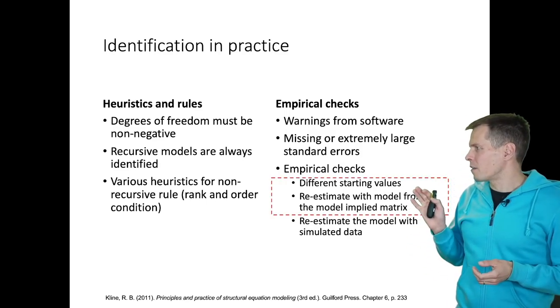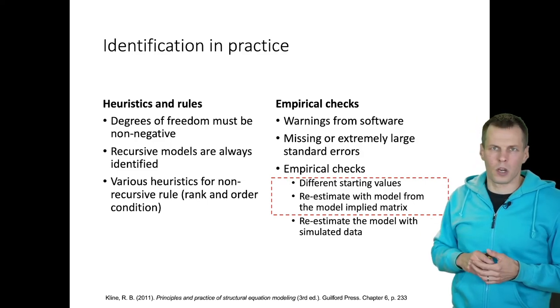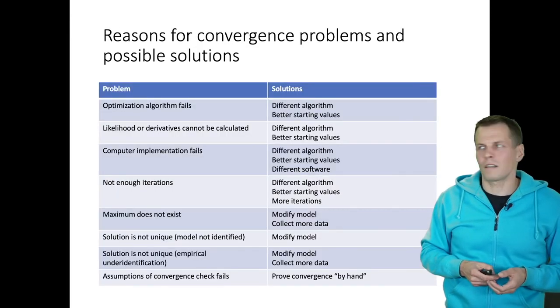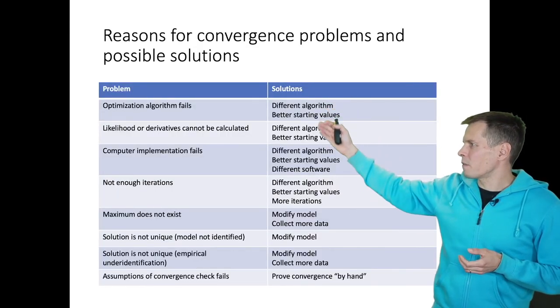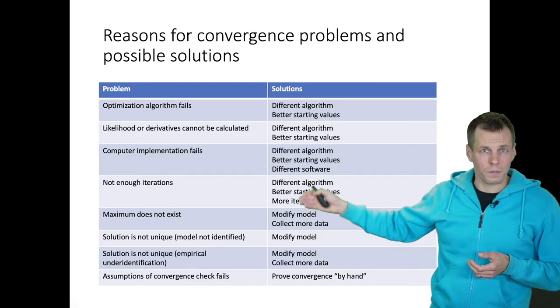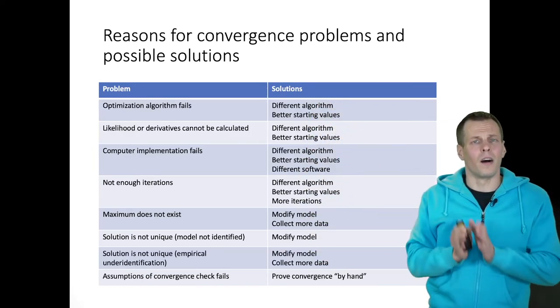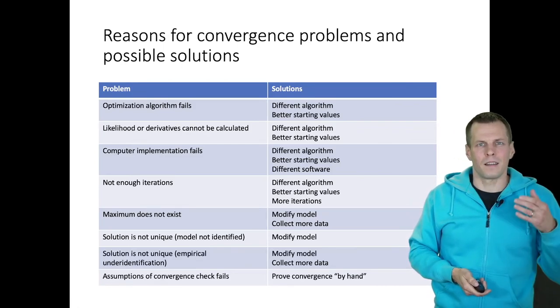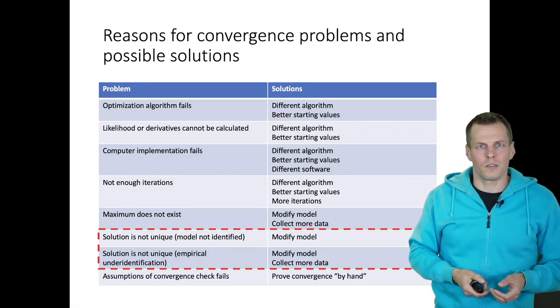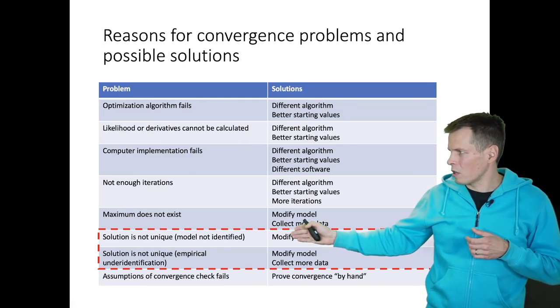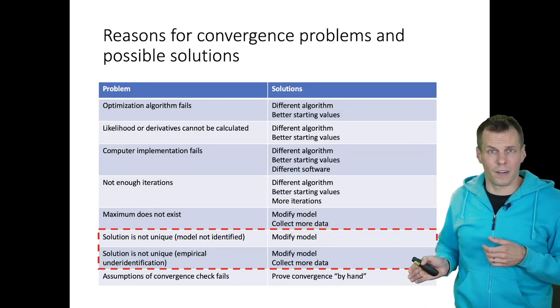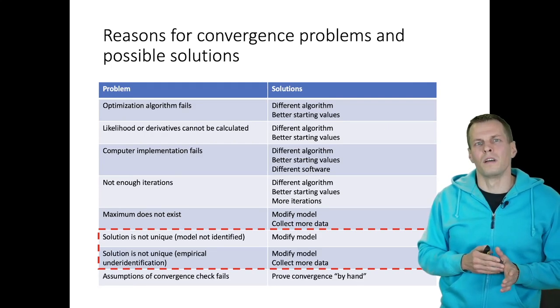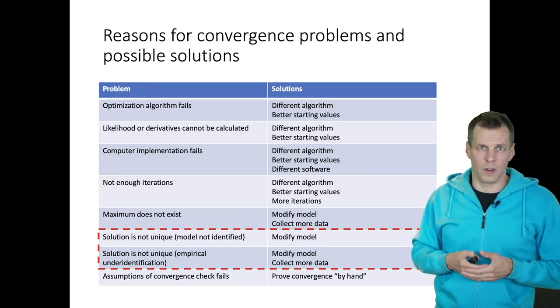So the empirical checks are different starting values and re-estimating model from model implied covariance matrix. How does this relate to the bigger picture? So there are a number of different ways that a model can not converge, a number of different reasons for that. And these identification checks are useful for diagnosing model identification, but not really useful for diagnosing purely computational problems. So for that, for example, inspecting starting values will be more useful.